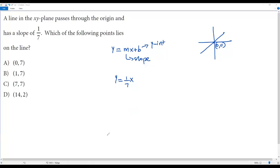Now let's take the point in option D, which is (14, 2). We plug in 2 for y and 14 for x. So 2 = (1/7)(14). Since 7 goes into 14 twice, we get 2 = 2. This is true! When we plug in the point (14, 2) into the equation, it is satisfied. The correct answer is option D.